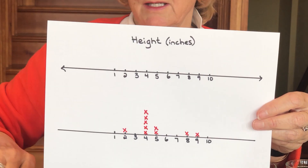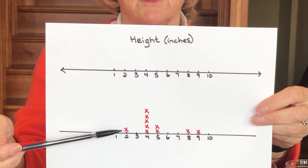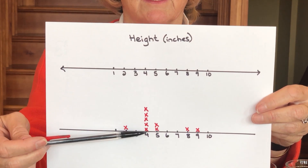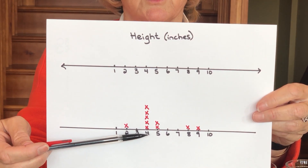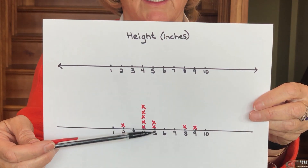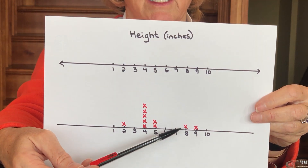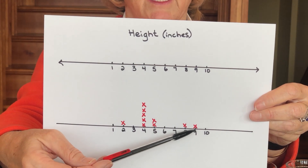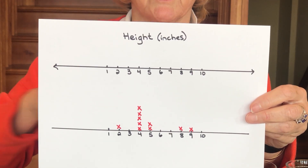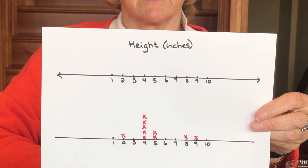You can see that I have one glass that was two inches tall, five glasses that were four inches tall, two glasses that were five inches tall, a glass that was eight inches, and a glass that was nine inches tall. So each X represents the height of one of my ten glasses.